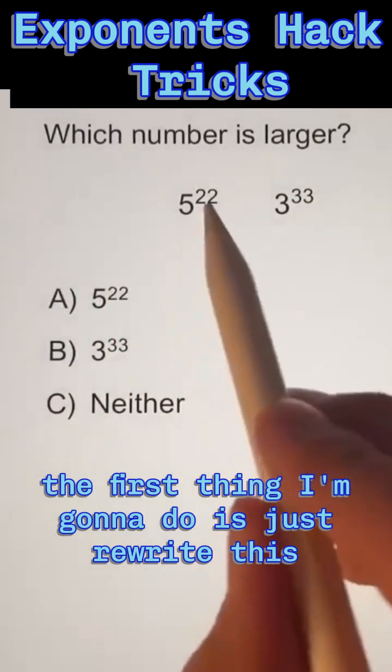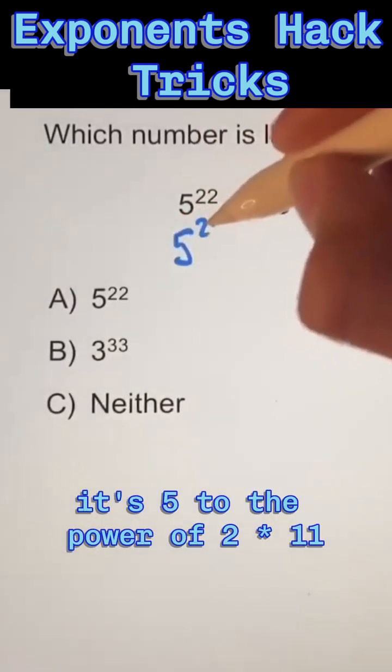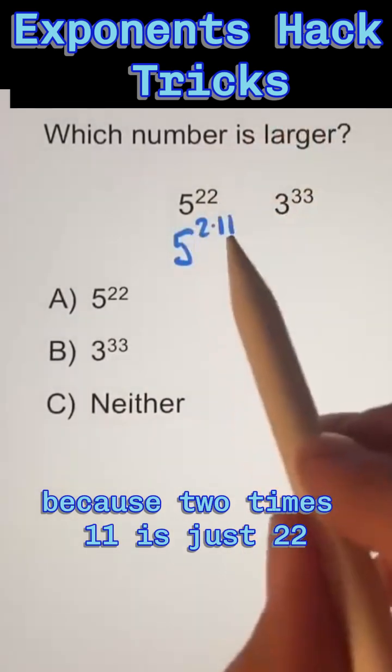So the first thing I'm going to do is just rewrite this 5 to the power of 22. I'm going to rewrite it as 5 to the power of 2 times 11, because 2 times 11 is just 22.